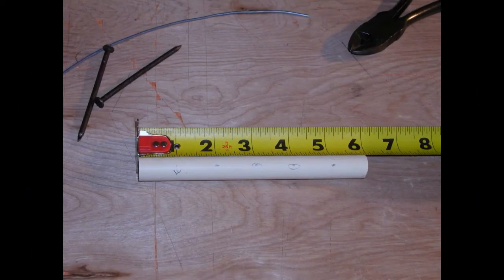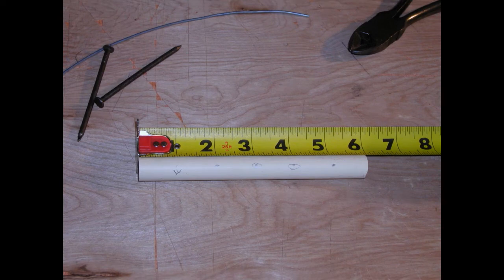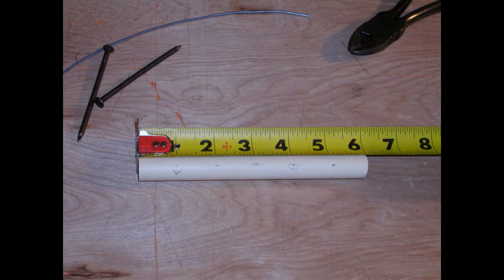To make the end insulator we first cut a six inch piece of one half inch PVC. At the two inch mark we only drill through one side of the PVC. The same is true at the five inch mark.